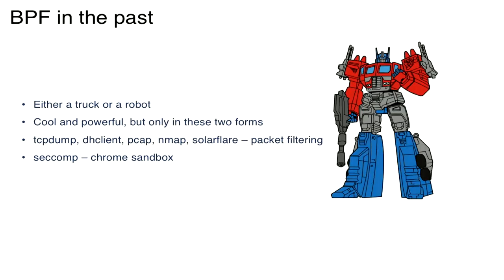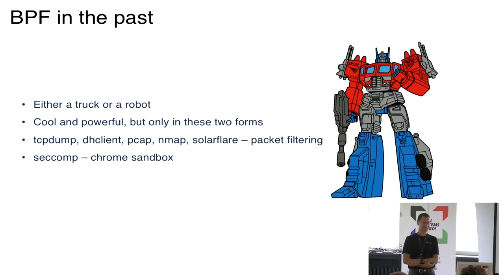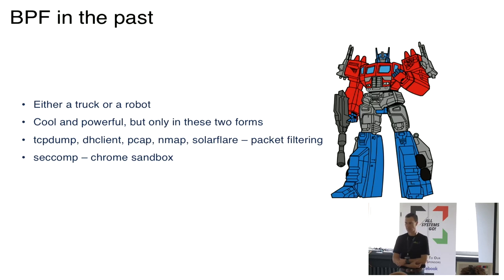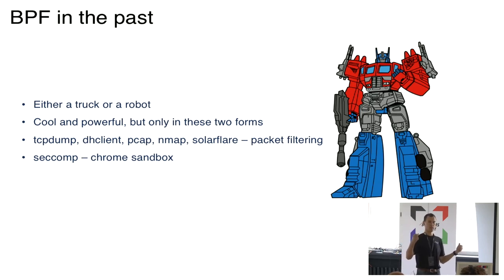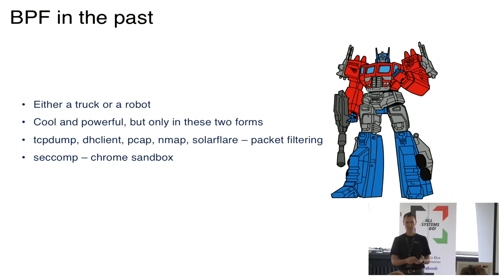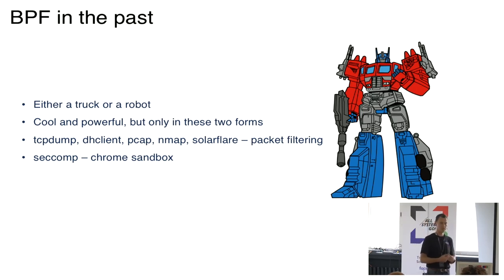Looking back at how we started: long ago when classic BPF was introduced by Van Jacobson, it was pretty cool but had only two shapes — a truck for filtering packets through the pcap interface, and a robot for seccomp filtering. Both are cool and seccomp is still heavily used, but only those two forms existed. Classic BPF was designed with a packet filter in mind, whereas the extended one came as a generic infrastructure to extend the kernel. That's a fundamental difference.